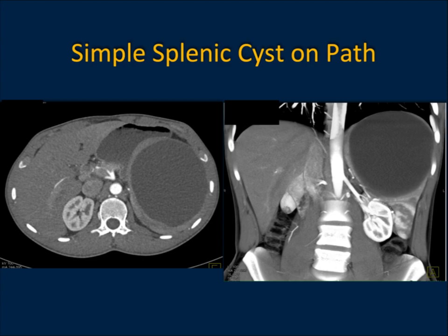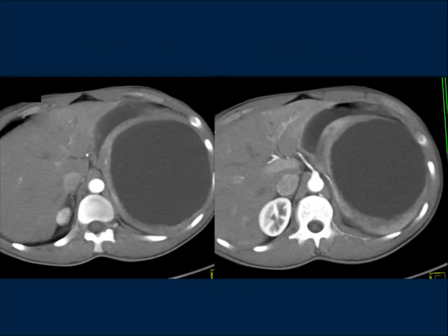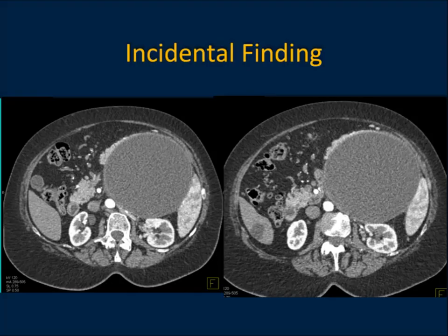Another example — here's a simple cyst, intrasplenic. Size-wise and symptom-wise, this is going to come out. This was a simple cyst: water density, well-defined, with compression of the normal splenic tissue and simply pushing down.